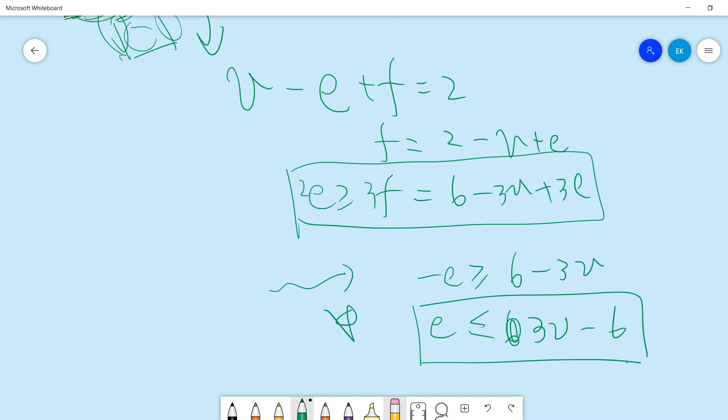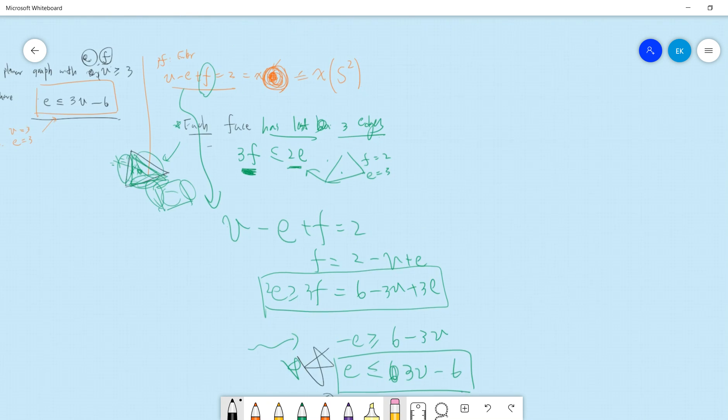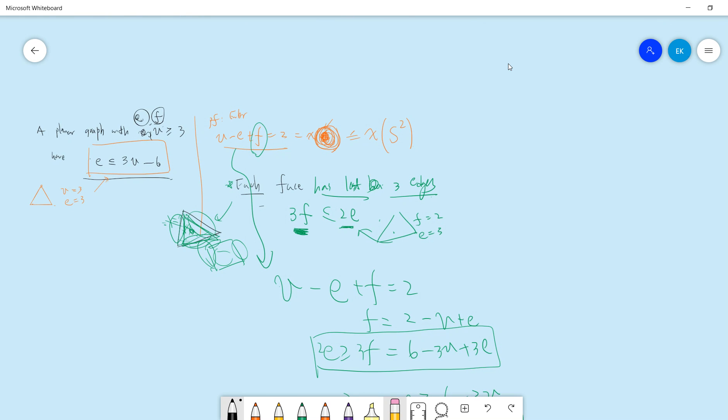Okay, so we have minus E larger than six minus three V, and then we have E less than three V minus six. Okay. I will see you guys in other videos, be sure to subscribe to my channel, so this is what we proved today. If you want to see more graph theory proofs, be sure to go to my channel and check it, and I will see you guys in other videos.